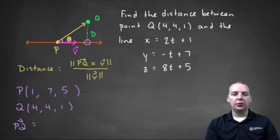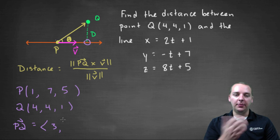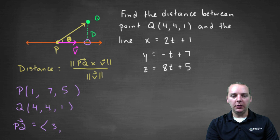So we'll do terminal minus initial to create this vector here from initial point to terminal point. So four minus one is three, that'll be your i-th component. Four minus seven will be negative three, that's your j-th component. And one minus five is negative four, that's your k-th component.